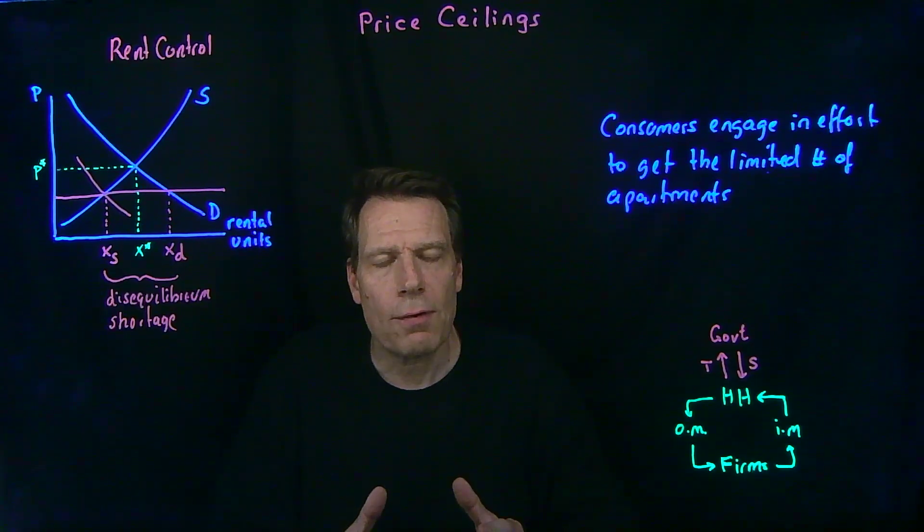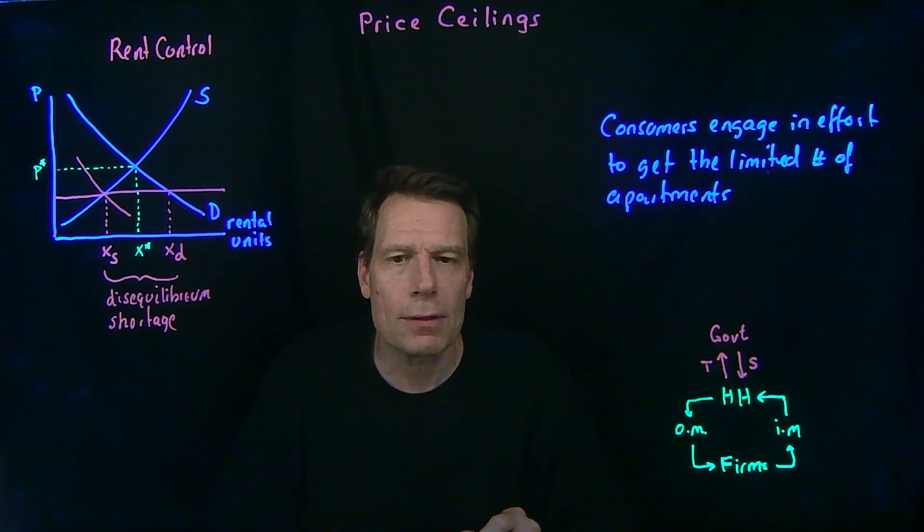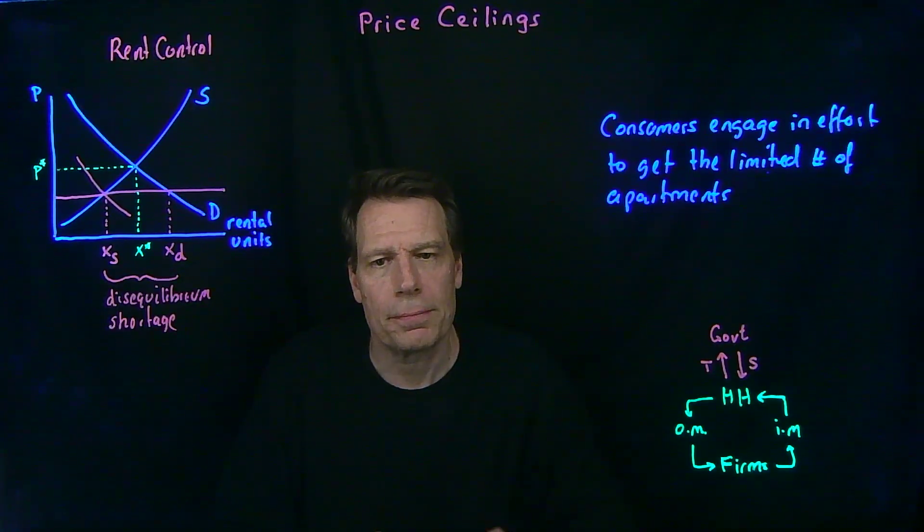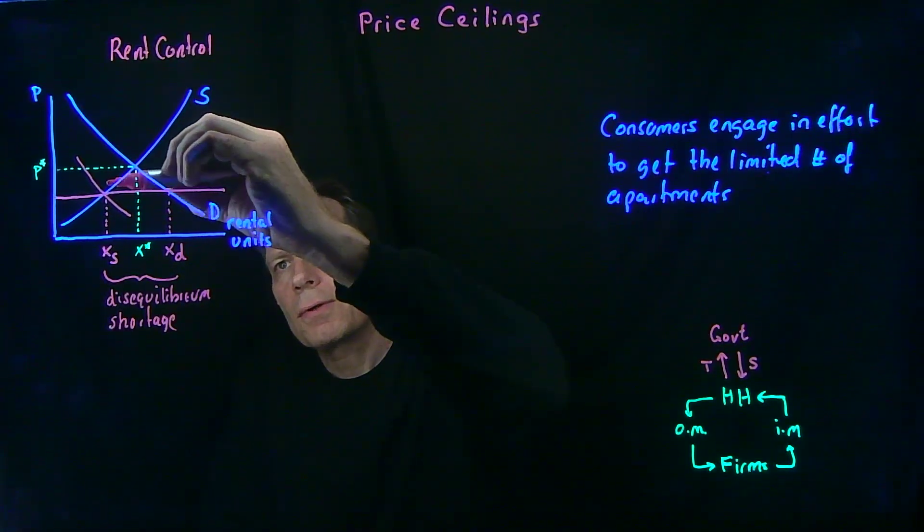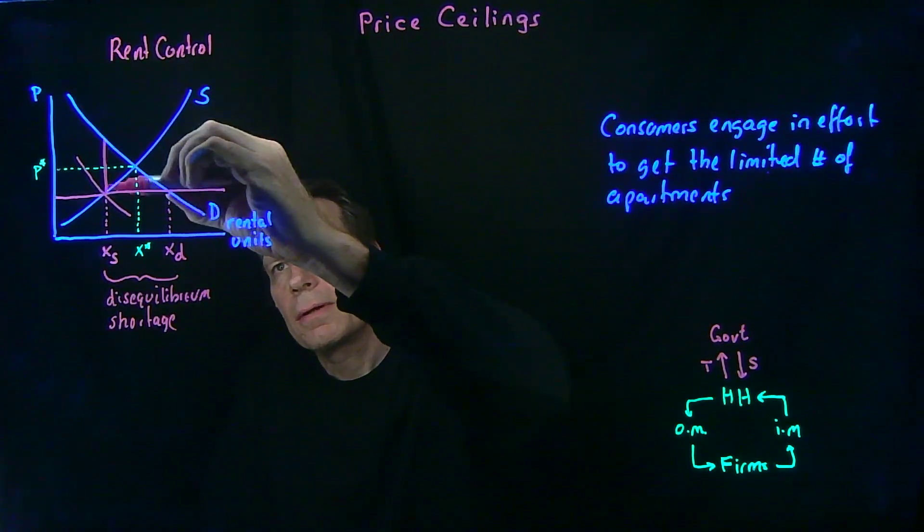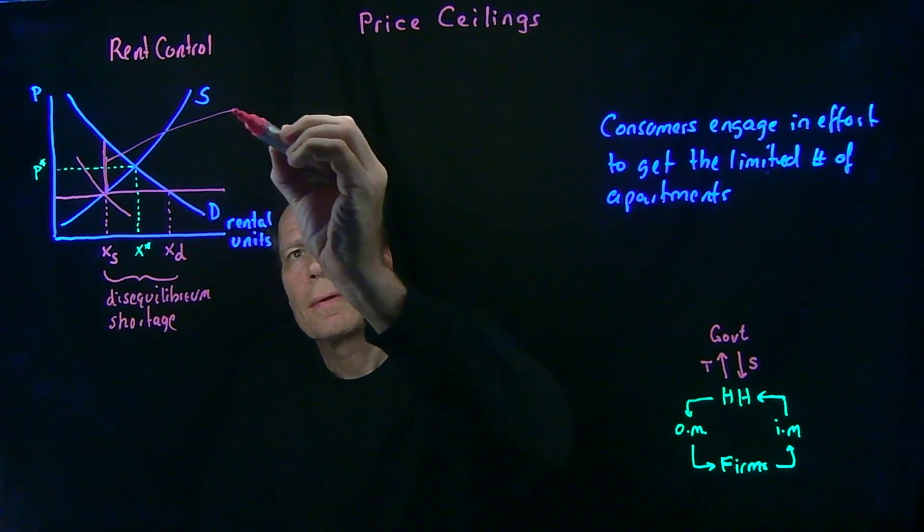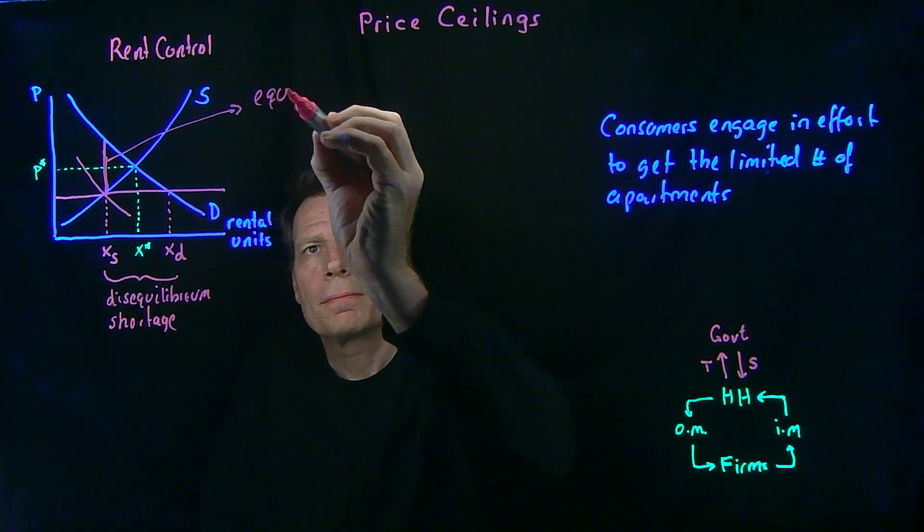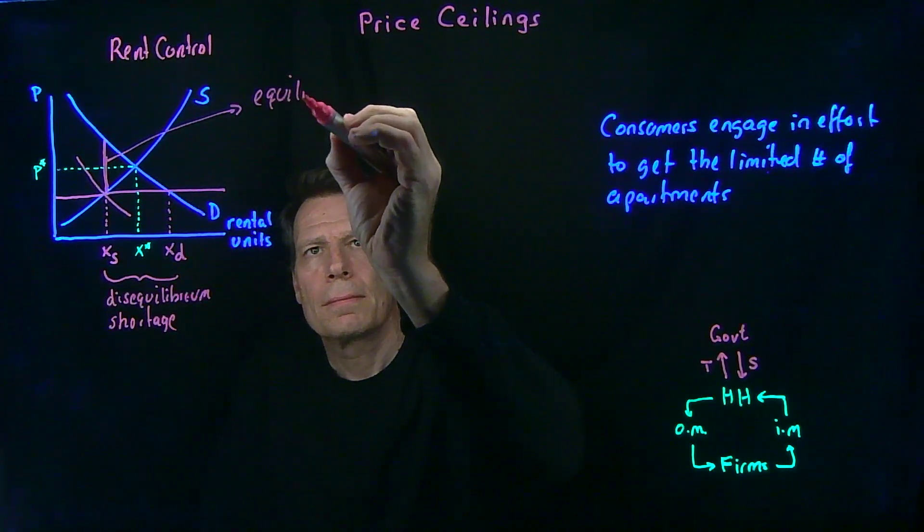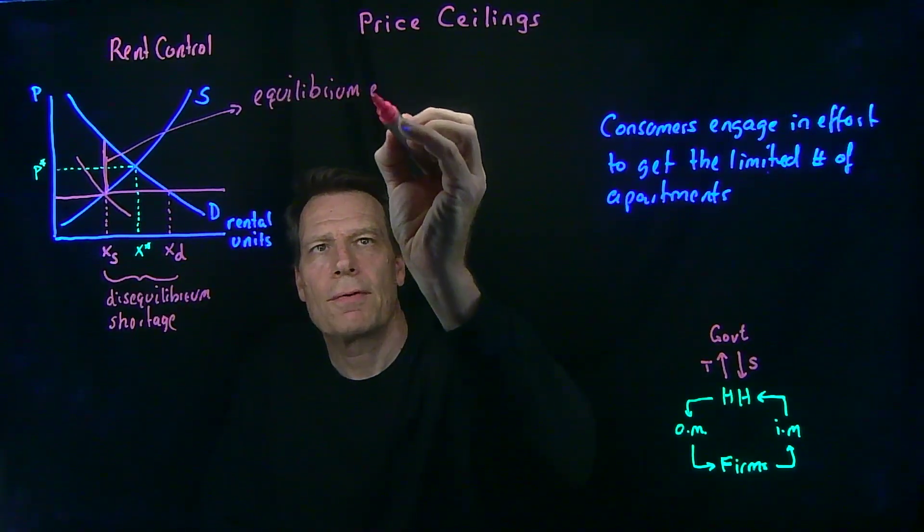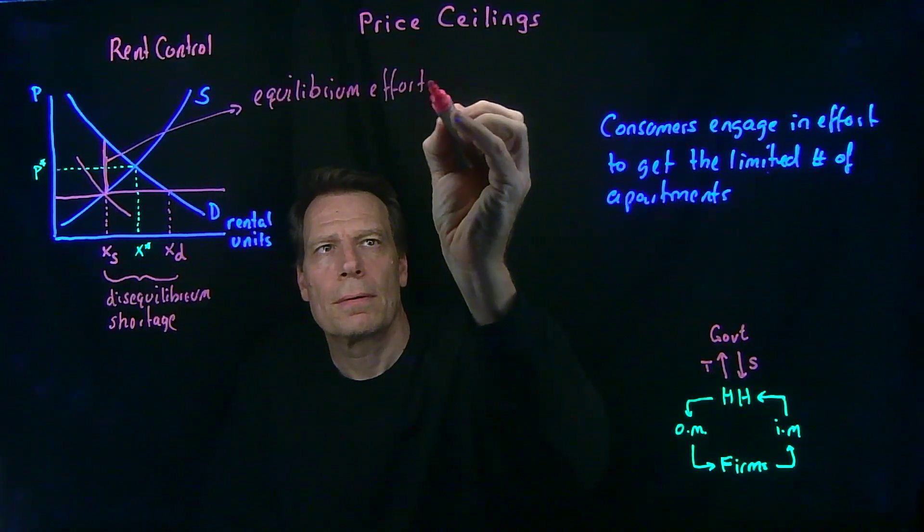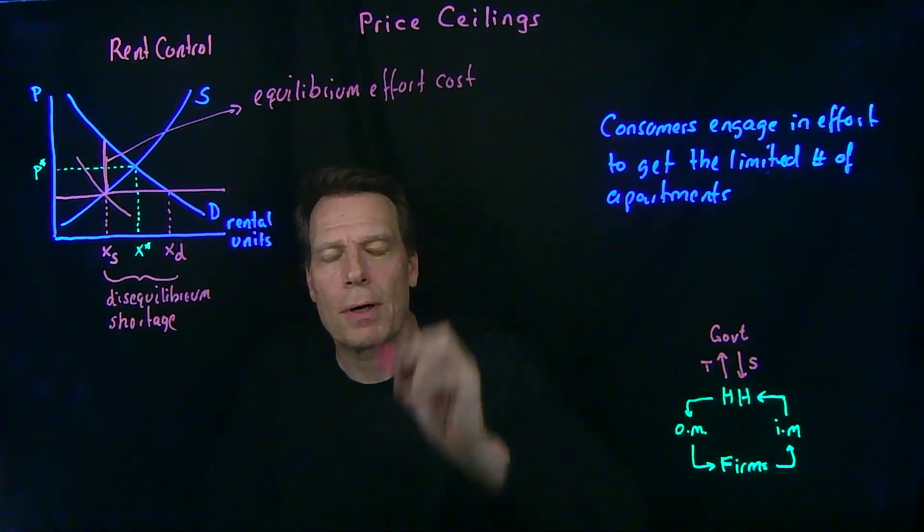We can even quantify in this picture how much the effort cost is for those consumers who get into those units. It's the vertical difference, just as that vertical difference was the per unit tax in our tax example. So this vertical difference here is the equilibrium effort cost to get into one of those apartments.